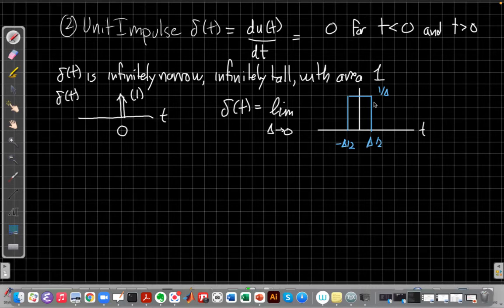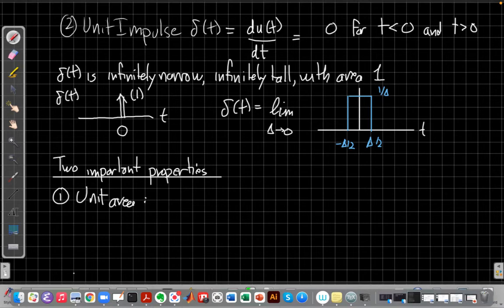And there are two key properties for the unit impulse response. The first is the one we just mentioned, the unit area. And what the unit area says is if I take the integral over an impulse, I get an area of one. So the integral of δ(τ) dτ is going to always be one.